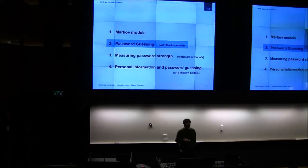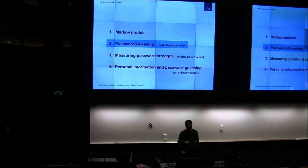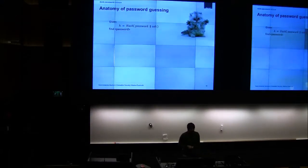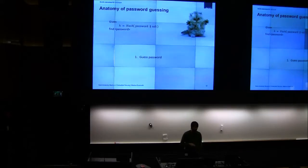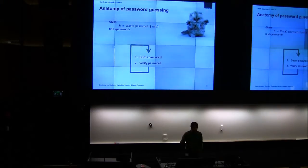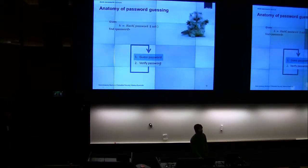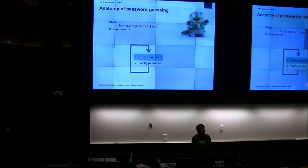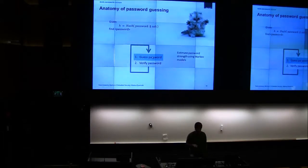Now we want to use this knowledge for password guessing, for measuring password strength, and I also want to say some words on how to use personal information in password guessing based on Markov models. For password guessing: we have a hash, we want to find the password. We do that iteratively — guess a password, verify it, and start over if incorrect. For this talk we concentrate on the guessing part. We're not concerned with verifying or hashing speed. We concentrate on several ways to guess passwords based on Markov models.